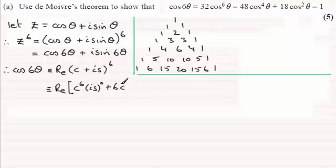Reduce the power of c by 1, so c⁵, and then increase the is by 1, so that's 1 there. And if we continue with this you should find you get the following.